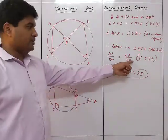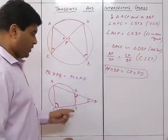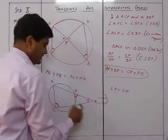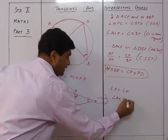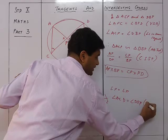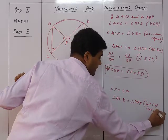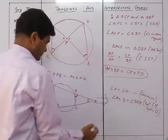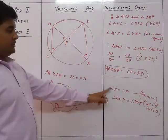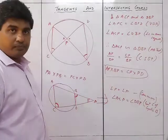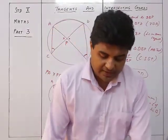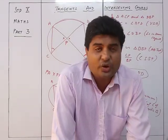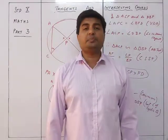Hence the two triangles are similar. Angle P is common; angle ACD equals angle DBP — exterior angle of a cyclic quadrilateral. So the rest of the proof is the same, giving PA × PB = PC × PD. That was theorem 12: if two chords of a circle intersect externally or internally, the products of the lengths of their segments are equal.